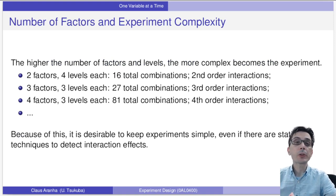The higher the number of factors, the more complex your experiment becomes. If you have two factors with four levels each, you have 16 total combinations with second order interactions. Three factors with three levels each gives 27 total combinations with third order interactions. Four factors with three levels each gives 81 combinations. As you can see, as we add more factors, the experiment becomes more and more complicated. As much as possible, we want simple experiments with few factors, because they are easier to analyze and understand. It's not useful to have an experiment with many factors if you cannot understand the results.